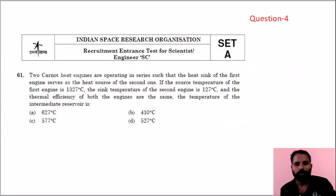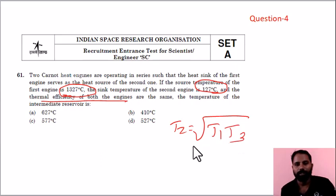Next question, this is an ISRO previous year question. Convert temperatures from Celsius to Kelvin. For equal thermal efficiency, use EG - geometric mean. T2 equals square root of T1 times T3. Apply the geometric mean formula to get the answer in Kelvin.